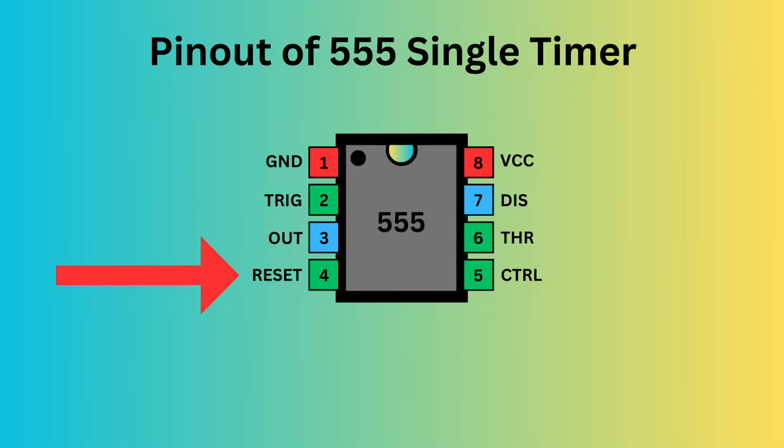Pin 4, the reset pin, is used to reset the 555 timer's internal flip-flop. Pin 5 serves as the control pin, enabling you to adjust the threshold voltage levels used by the internal comparators to set and reset the flip-flop.